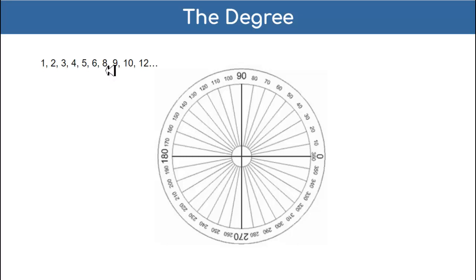So why did they choose 360 degrees? Because the number 360 is divisible by 1, 2, 3, 4, 5, 6, 8, 9, 10, and 12 - almost all the digits less than 12, except for 7 and 11. So 360 is very useful, very divisible. This is why they use 360 - because you can divide the circle in so many equal ways.